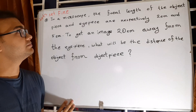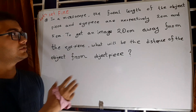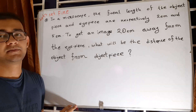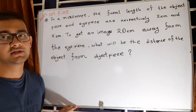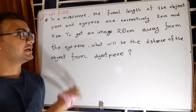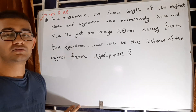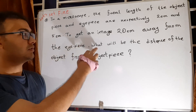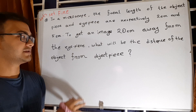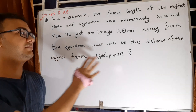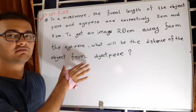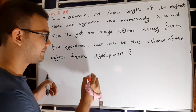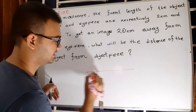In a microscope, the focal length of the object piece and the eyepiece are respectively 2 centimeters and 5 centimeters. To get an image 20 centimeters away from the eyepiece, what will be the distance of the object from the object piece?